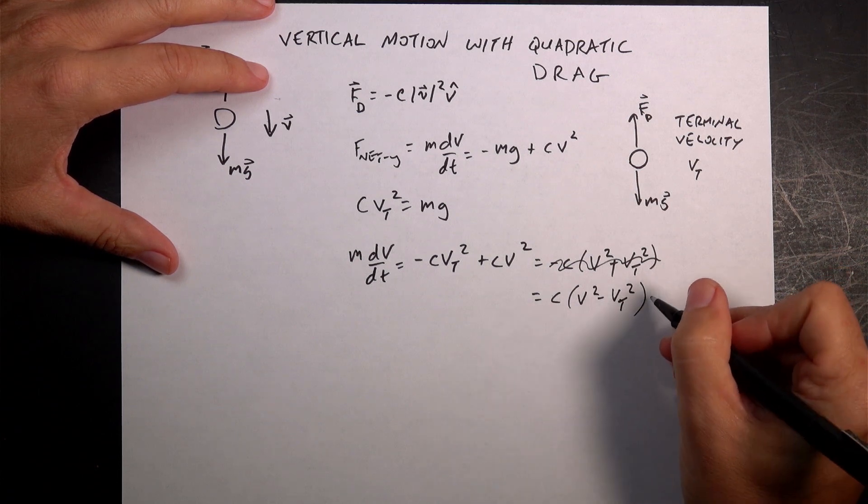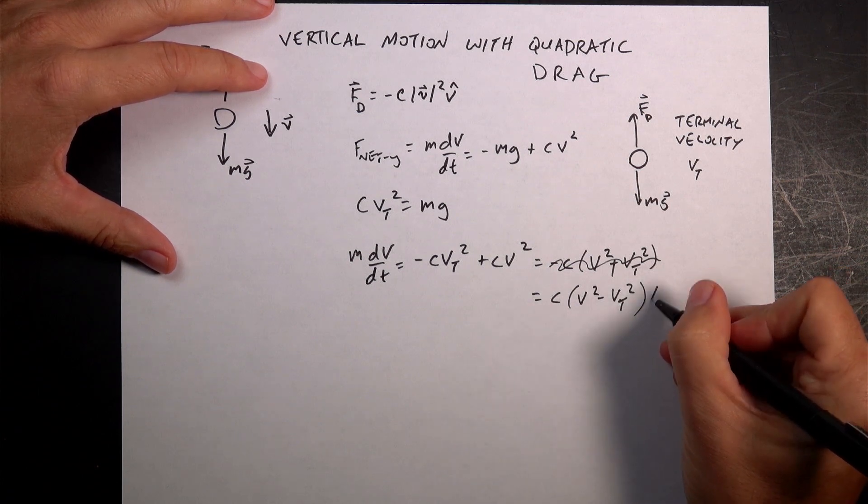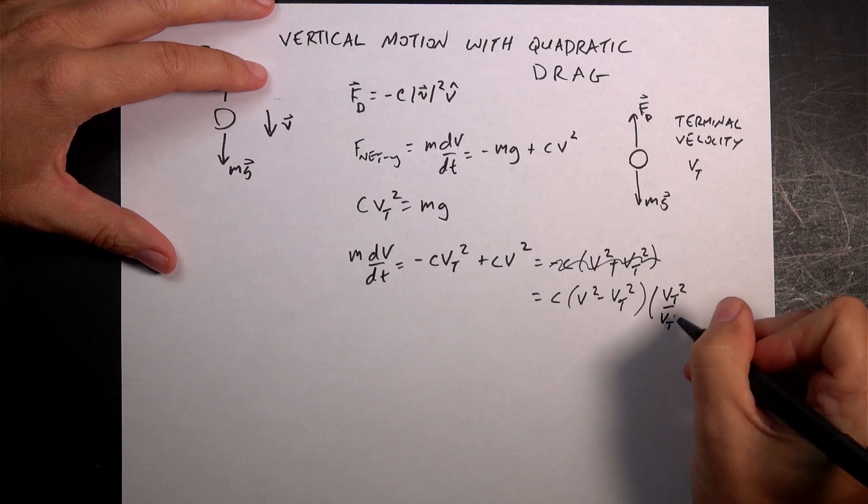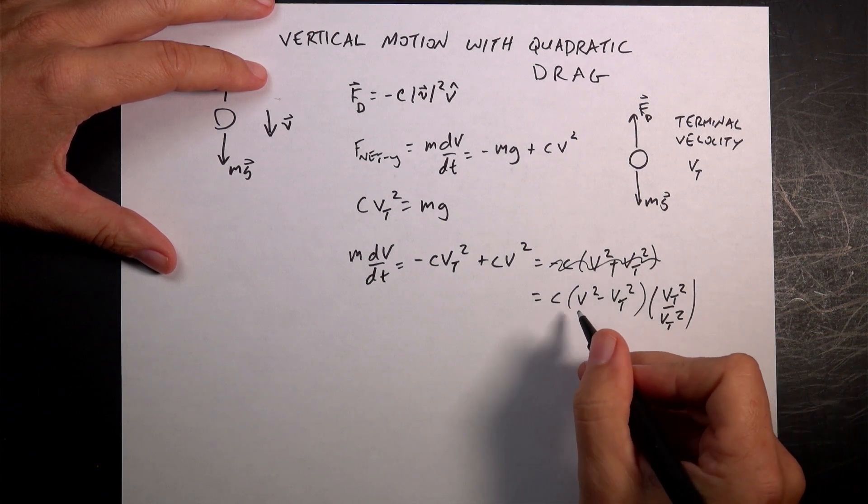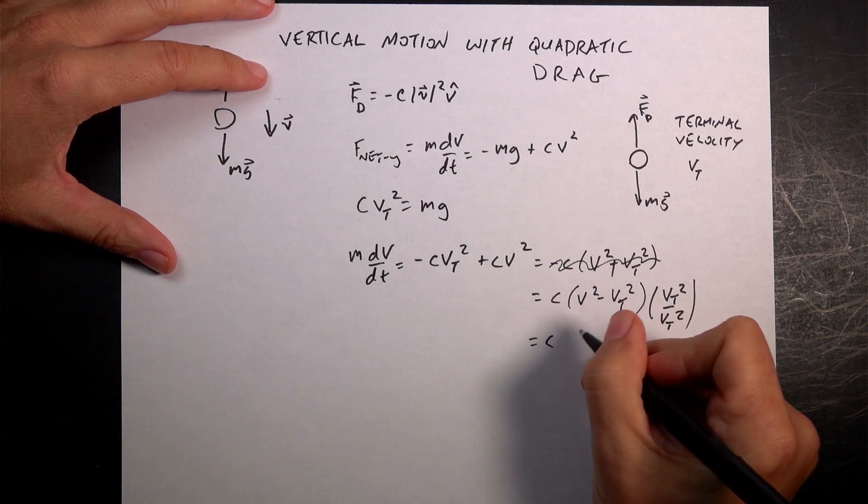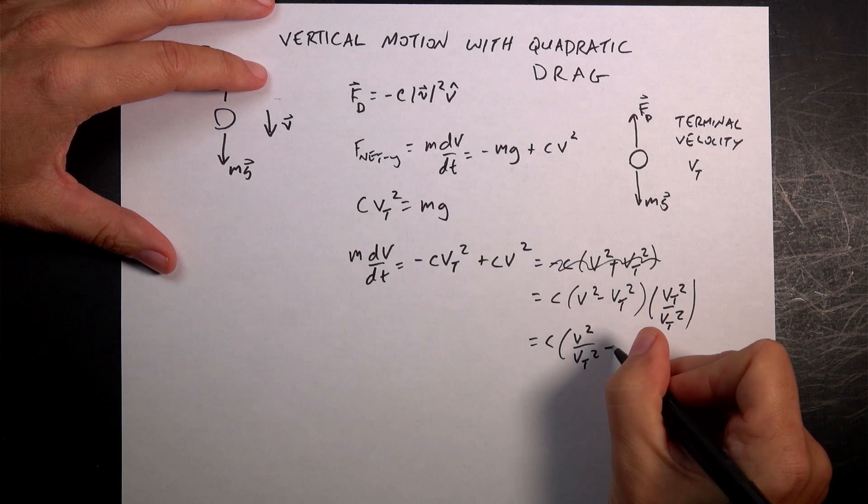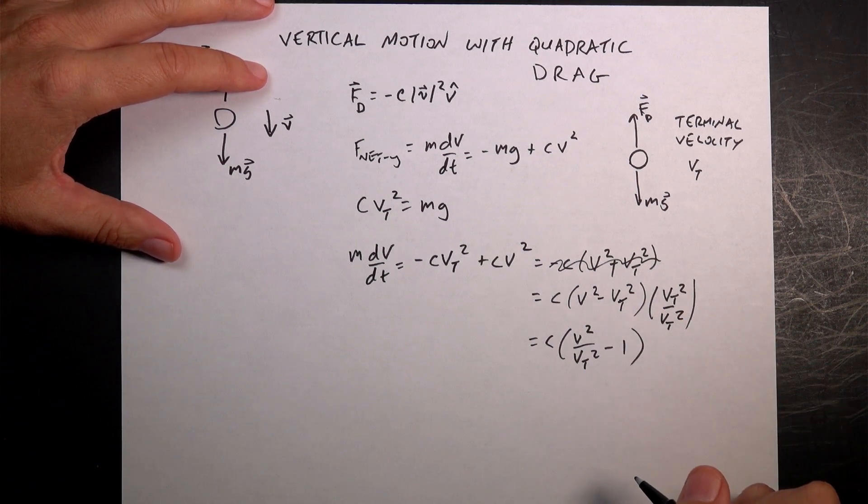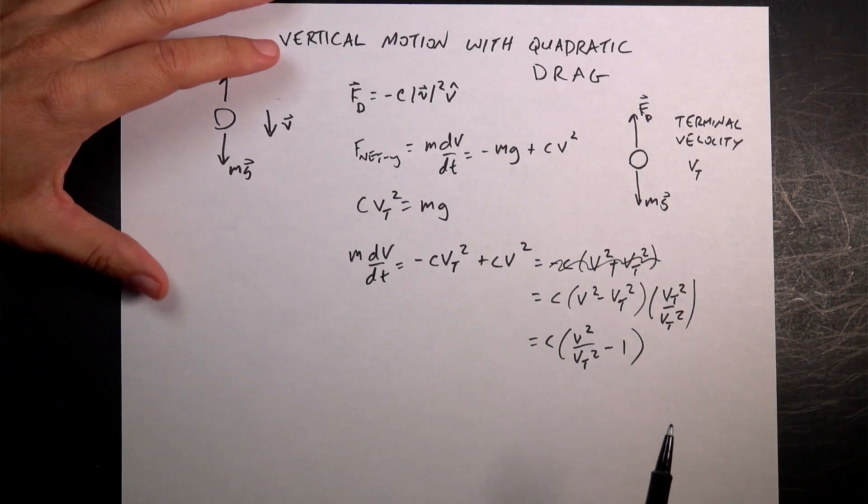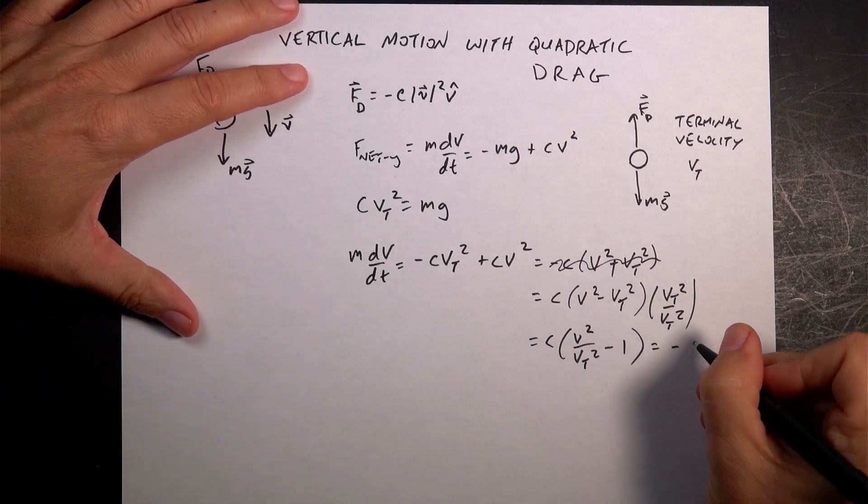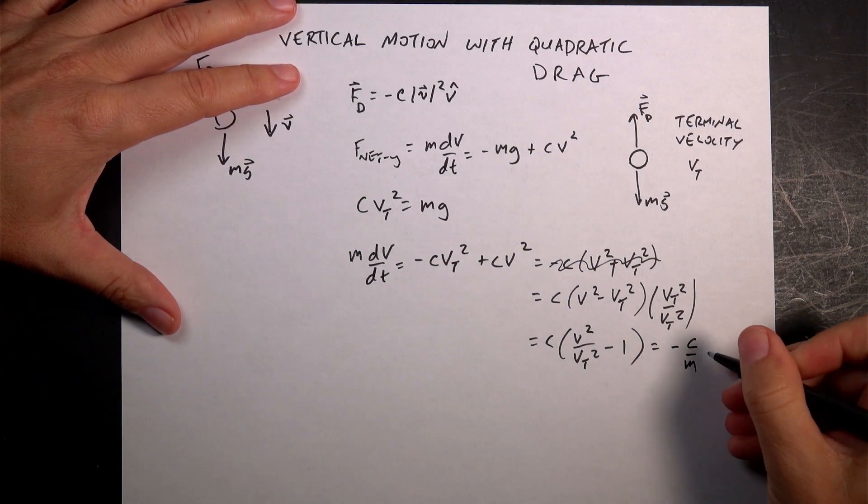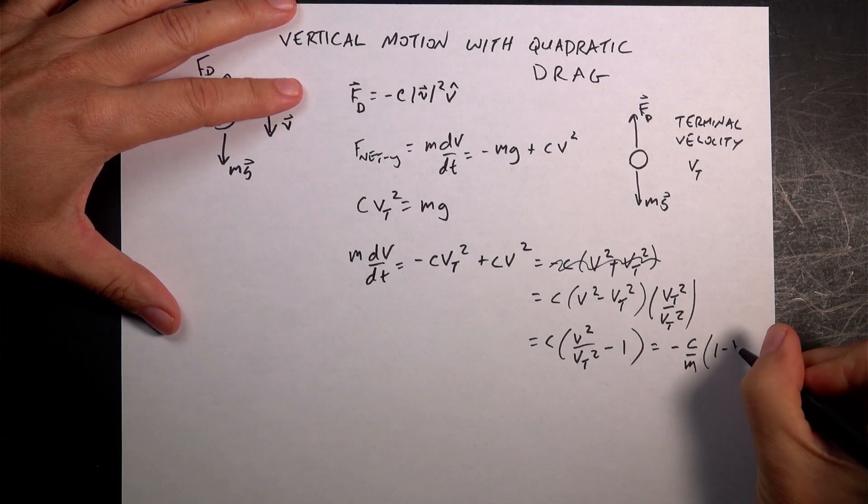And then I'm going to factor out the vt squared. So I get, if I multiply this and divide by vt squared over vt squared, then I get, bring this one in, I get C times v squared over vt squared minus 1.